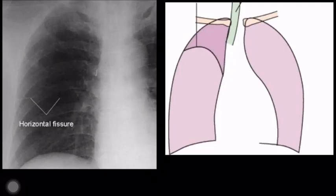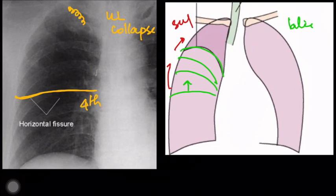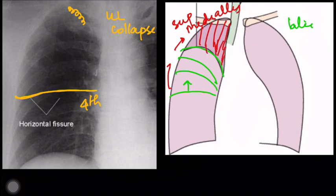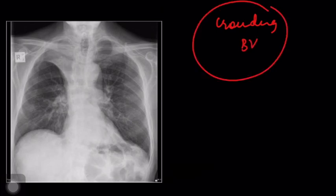Let's take a quick look. At the level of the fourth rib, we expect the normal position of the horizontal fissure. In the case of upper lobe collapse, this fissure shifts superiorly and medially, delineating a sharp border to the collapsed non-aerated lung parenchyma. Now let's see the third direct sign — crowding of bronchovascular markings. This is difficult to make out on chest X-ray and is appreciated better on CT scan.